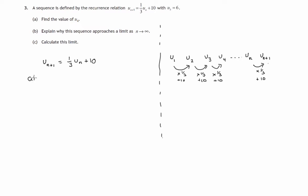So for part A, it asks us to find the value of u4, but we do know the value of u3, it's six. So u4 would be one-third of u3 plus ten. That's one-third of six plus ten. One-third of six is two, two plus ten is twelve. So this term is twelve.